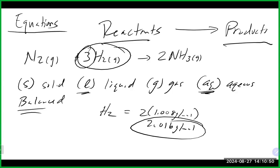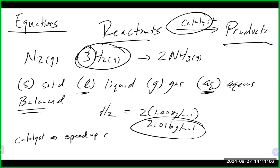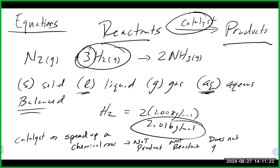Sometimes things are written on top of the arrow — those are sometimes referred to as a catalyst. A catalyst is usually there to speed up a chemical reaction. It is not a product, not a reactant, and it does not get used up. It's there to facilitate the reaction happening faster. You might see a metal written on top of the arrow, or H-plus, which is an acid catalyst.